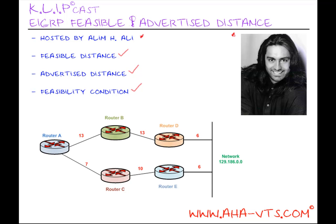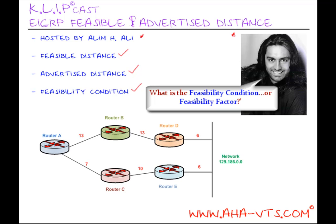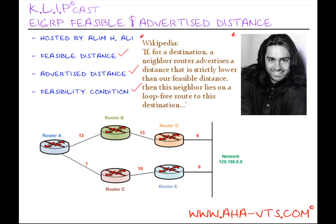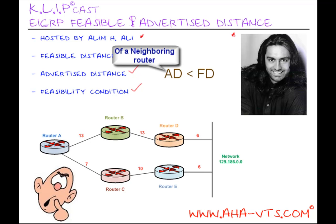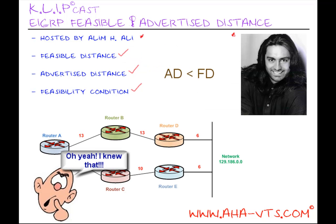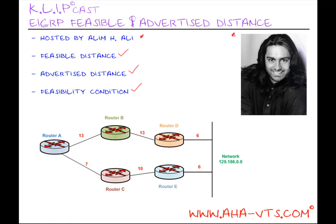So we've gotten through the feasible distance and advertised distance. Now let's lastly talk about EIGRP's feasibility condition. I've been asked this question on numerous interviews, and I also ask this question myself when interviewing others: what is the feasibility condition or feasibility factor? To start, let me quote some verbatim that I found on Wikipedia: if for a destination, a neighbor router advertises a distance that is strictly lower than a feasible distance, then this neighbor lies on a loop-free route to this destination. It basically breaks down to this equation: the advertised distance must be less than the feasible distance of a neighbor router to be considered a feasible successor to the successor router for a given destination. The feasibility condition helps us determine if a backup route exists if our primary route or successor fails.